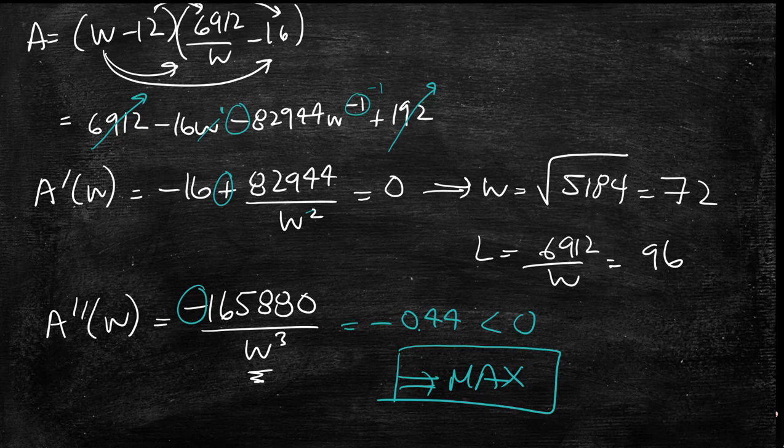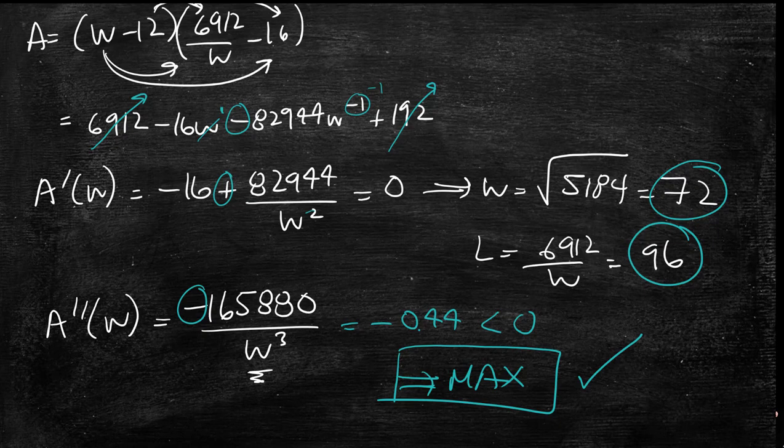So now you know that these dimensions, W equals 72 and L equals 96. Those dimensions are going to give us the maximum printing area. So the question is finished.